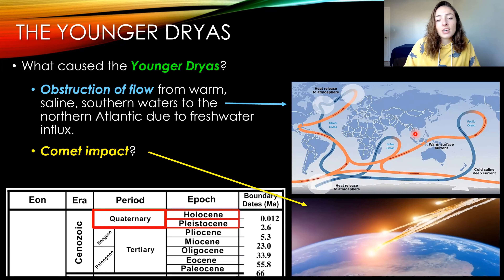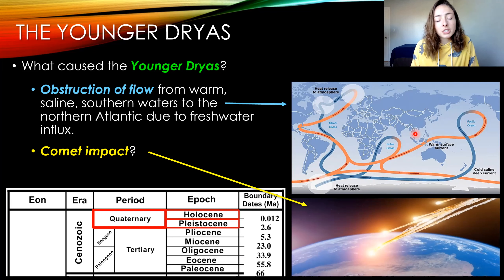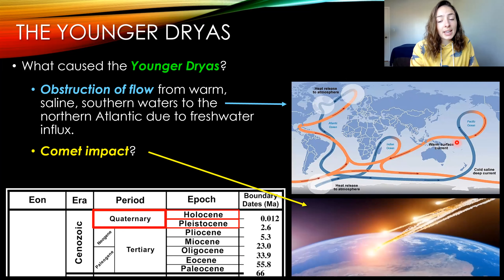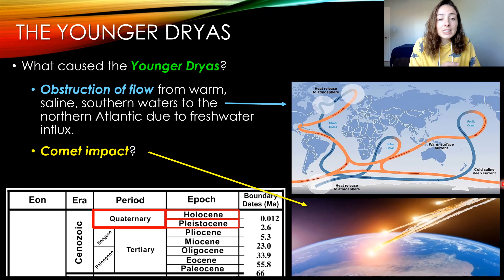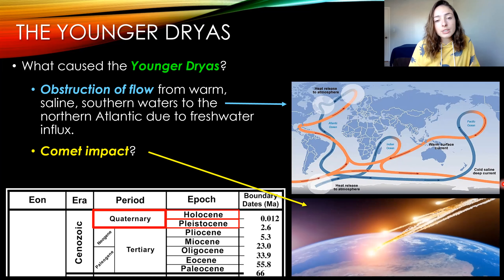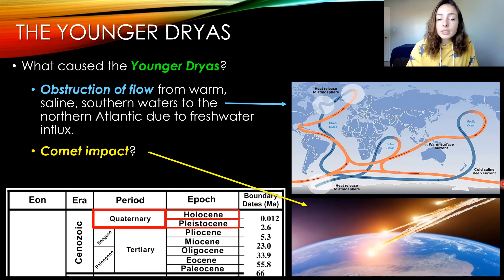Why the Younger Dryas happened is another question entirely. It was a little weird that warming conditions just abruptly switched back to cooling. One hypothesis is that ocean circulation — which circulates cold and warm water around the entire ocean — may have been disrupted around 12,000 years ago. A freshwater influx from melting glaciers may have blocked the flow of warm saline waters to the North Atlantic, causing more glaciation to occur in that region.